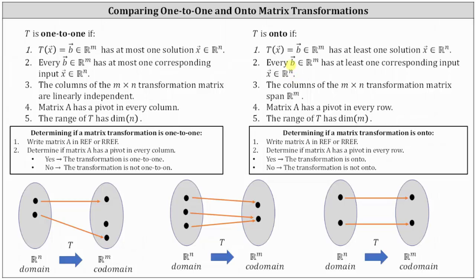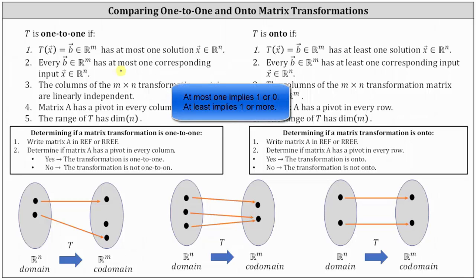Notice the only difference between the definitions of a one-to-one transformation and an onto transformation is: for a one-to-one transformation, every vector b has at most one corresponding input vector, and for an onto transformation, every vector b has at least one corresponding input vector.